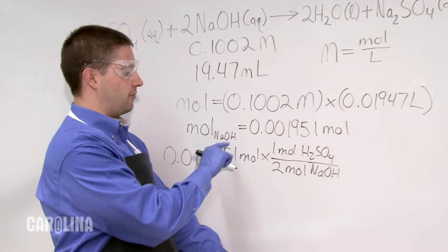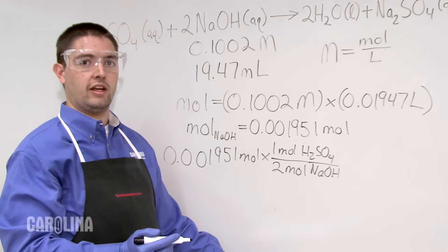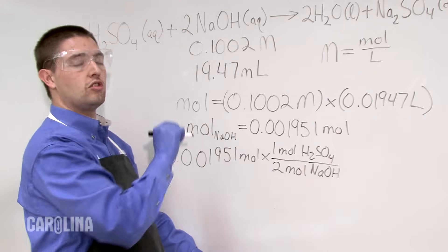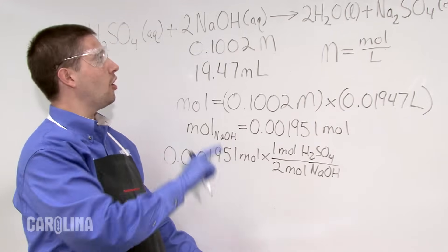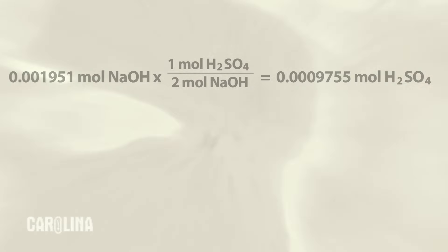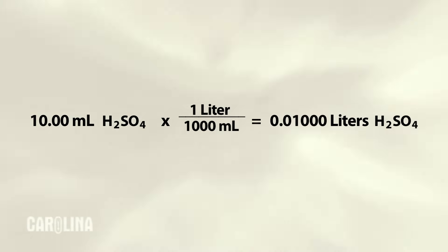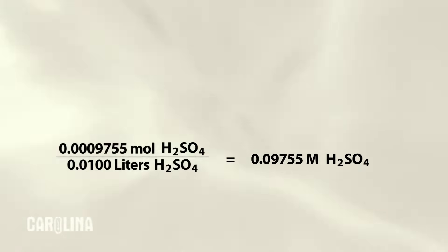Now that we've calculated the number of moles of sodium hydroxide, we can recall from our balanced equation that for every two moles of sodium hydroxide, one mole of sulfuric acid is neutralized. Therefore, we can calculate the number of moles of sulfuric acid. The titration requires 10 milliliters of sulfuric acid. Convert that to liters and divide it into the calculated number of moles. For this trial, the concentration of sulfuric acid is 0.09755 molar.